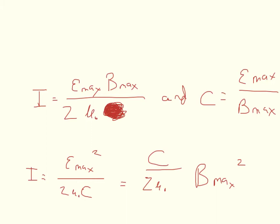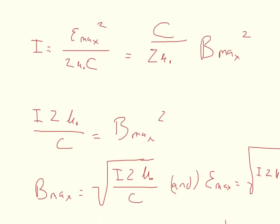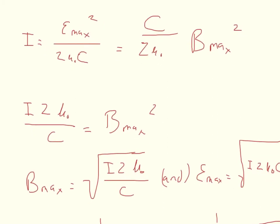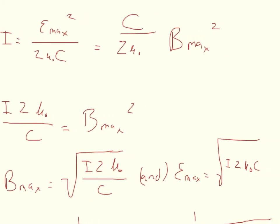So at this point all you have to do is solve for E or B. So you would take the intensity times 2 mu times the speed of light and take the square root of that for Emax. Or, well I'll just go ahead and show you. So there's what you would get for Bmax and then you would repeat the equation for Emax. Now the thing you want to make note of is in Bmax you have the speed of light as part of the denominator. And in Emax you have the speed of light as part of the product. So that's the difference between the two.